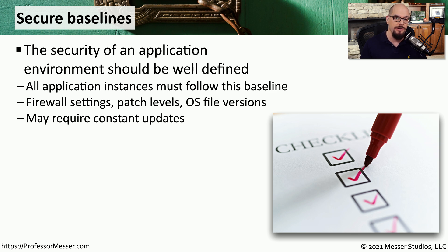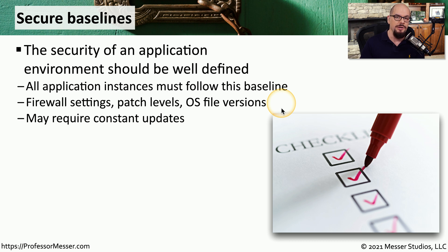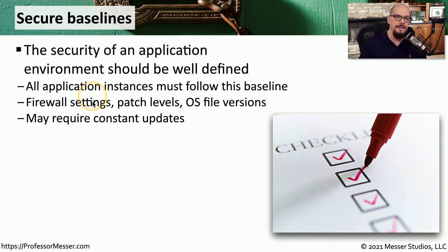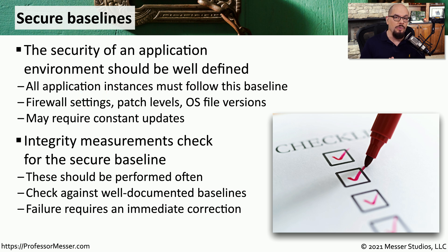Before deploying into production, it's a good idea to get a security baseline defining exactly what is required to secure and maintain the application. We want to define all important security characteristics — check firewall settings required for the application to work and remain secure, verify patch levels of the application and operating system, and make sure OS files are up to date with the latest security patches. If we deploy multiple instances of the application, this security baseline should be followed for each one. Any changes to the application could affect firewall settings, patch versions, and other security aspects, so security baselines should always be kept up to date. It's also good practice to perform integrity checks once the application has been deployed into production.